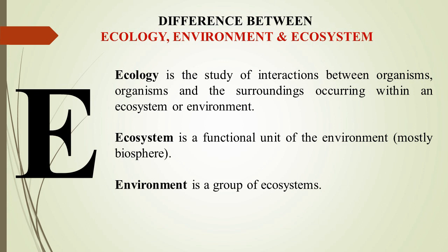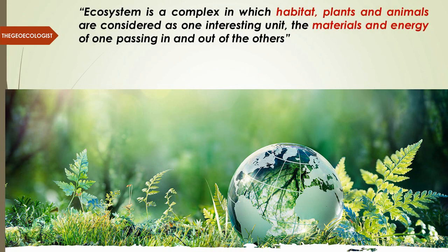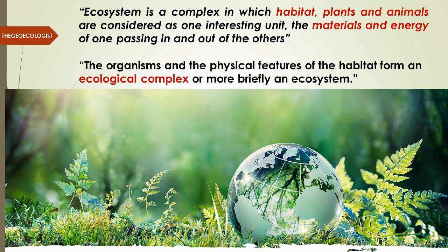Environment is the group of such ecosystems and is generally about the physical part of nature. Looking at these three different concepts — the three E's: Ecology, Ecosystem, and Environment — they are interlinked. Ecosystem is defined as a complex in which habitat, plants, and animals are considered as one interesting unit. Flora and fauna form one unit of that system, and material and energy is a different component that passes through these systems.